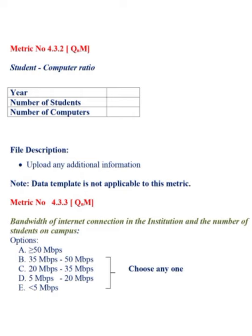Next, metric number 4.3.2 is a quantitative metric covering student-computer ratio for the latest academic year. Enter the total number of students and total number of computers. Note: only computers available for students are counted — computers for office and faculty will not be considered. Upload any additional information. Data template is not applicable to this metric.